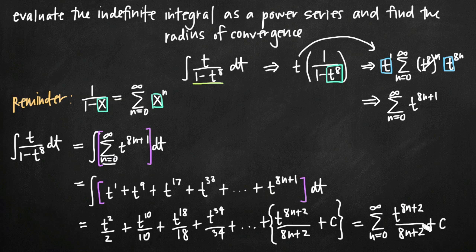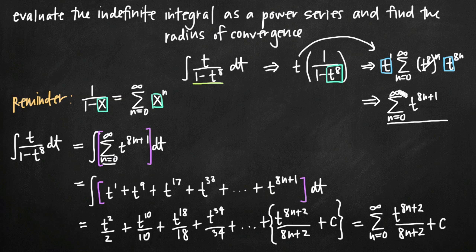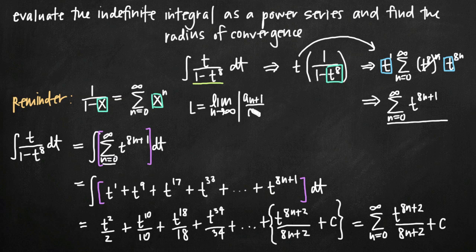All we need to do now is find the associated radius of convergence. To do that, we'll use our original power series representation — the sum with t to the 8n plus 1 — not the integrated one. We're looking for the radius of convergence of the original function's power series. We'll use the ratio test, one of the easiest ways to find the radius of convergence. The ratio test says l equals the limit as n approaches infinity of the absolute value of a sub n plus 1 divided by a sub n.